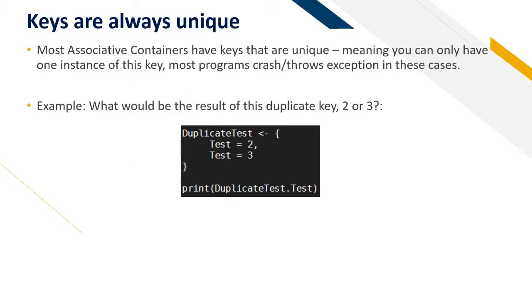Keys are always unique. Most associative containers have keys that are unique. This means you can only have one instance of this key. Most programs crash or throw exceptions in these cases.